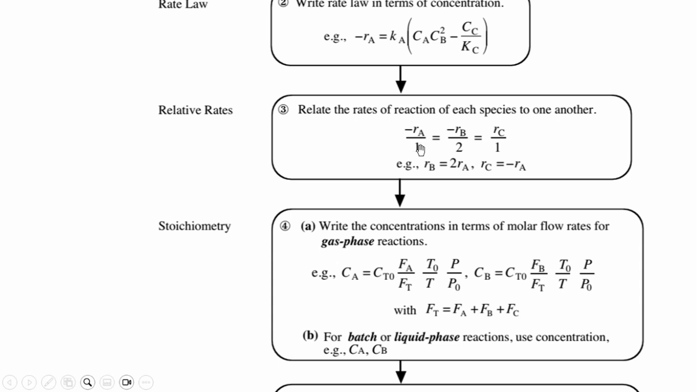According, the rate divided by its stoichiometric coefficient. So rB = 2·rA, rC = -rB.